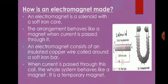An electromagnet is a solenoid with a soft iron core. A solenoid is a cylindrical coil of wire acting as a magnet when carrying an electric current. Here in the diagram I have shown a bar type electromagnet and a horseshoe type electromagnet. An electromagnet consists of an insulated copper wire coiled around a soft iron bar. When current is passed through this coil, the whole system behaves like a magnet — it is a temporary magnet.